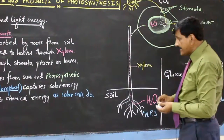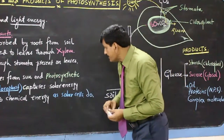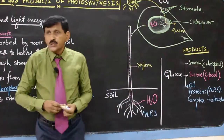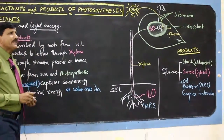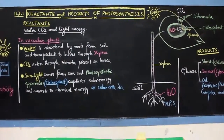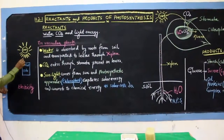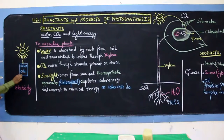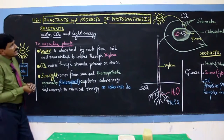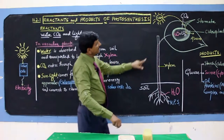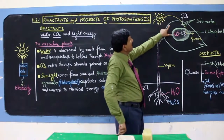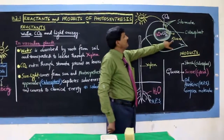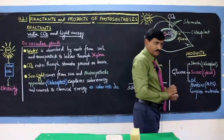This is compared to solar cells. Solar cells — solar plates — convert solar energy into electricity. Similarly, yahan par, chloroplast, solar energy ko convert kar raha hai to glucose.